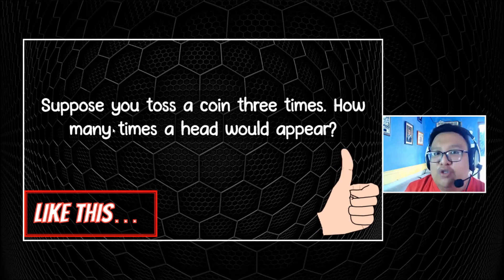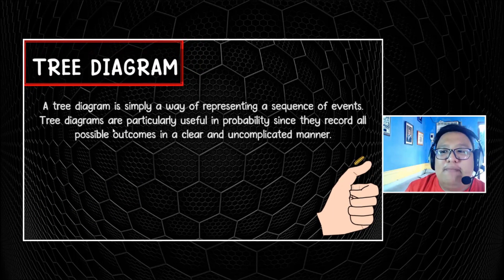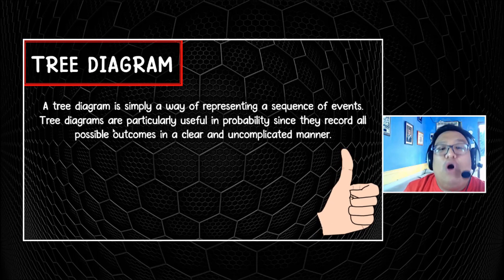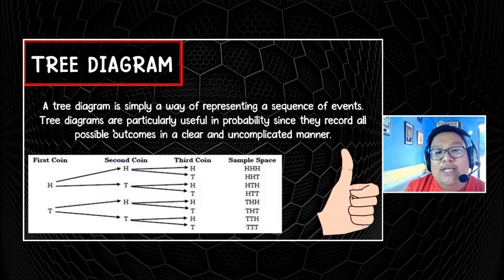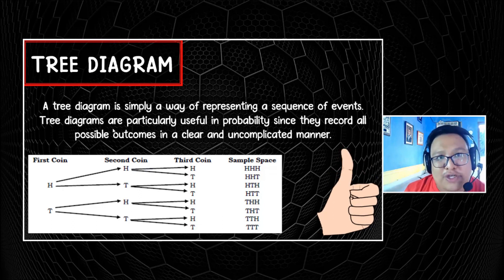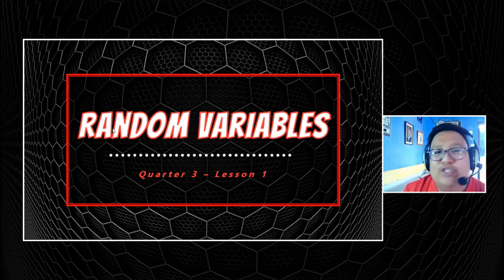And in order to further solve this problem, we need to use a tree diagram. A tree diagram is a simple way of representing a sequence of events. It is particularly useful in probability since it records all possible outcomes in a clear and uncomplicated manner. This is how it looks like — there is branching, and while branching, we are determining the probable or possible sample space and outcomes. In the next video, we will be solving the problem I posted a while ago — we will determine the random variables using a tree diagram. See you there!